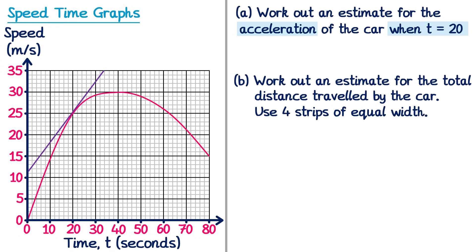To find the gradient of the tangent, we identify two clear points on it. I'll take the point (28, 31) and the point (4, 14). It's advisable to pick nice points that are quite far apart — the bigger the triangle, the more accurate the answer. The change in y is 31 − 14 = 17, and the change in x is 28 − 4 = 24. So the gradient = 17 ÷ 24 ≈ 0.71 m/s².